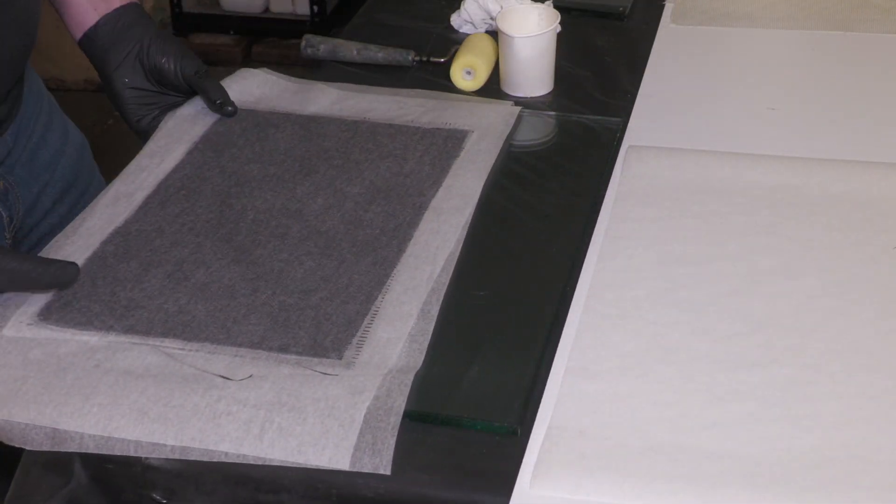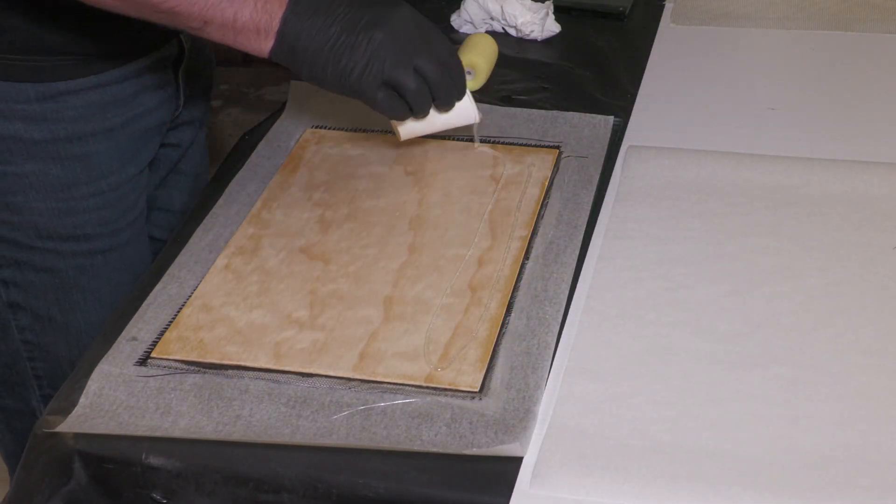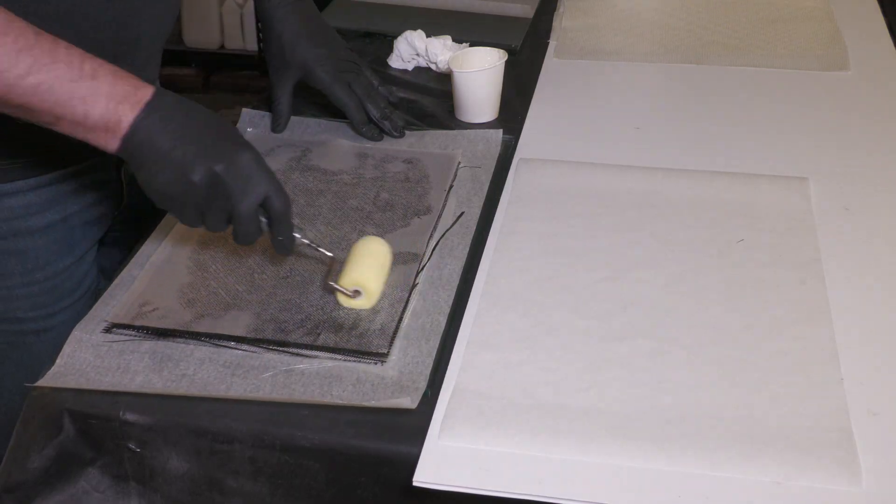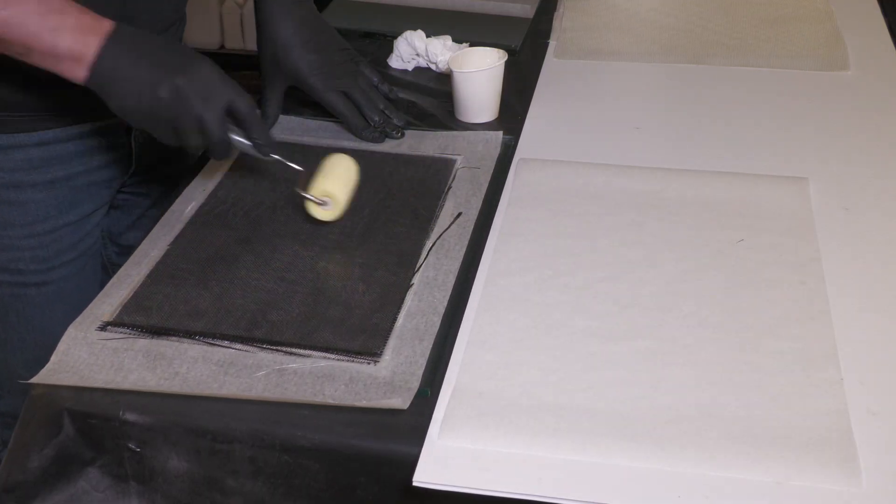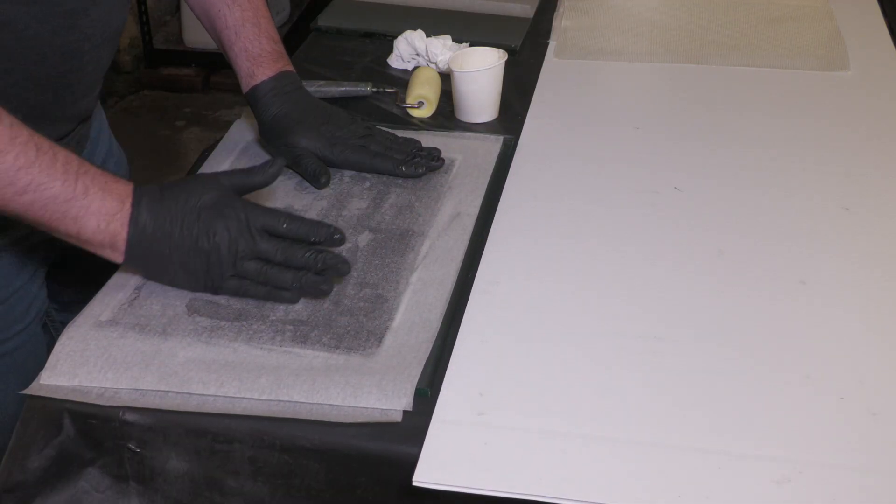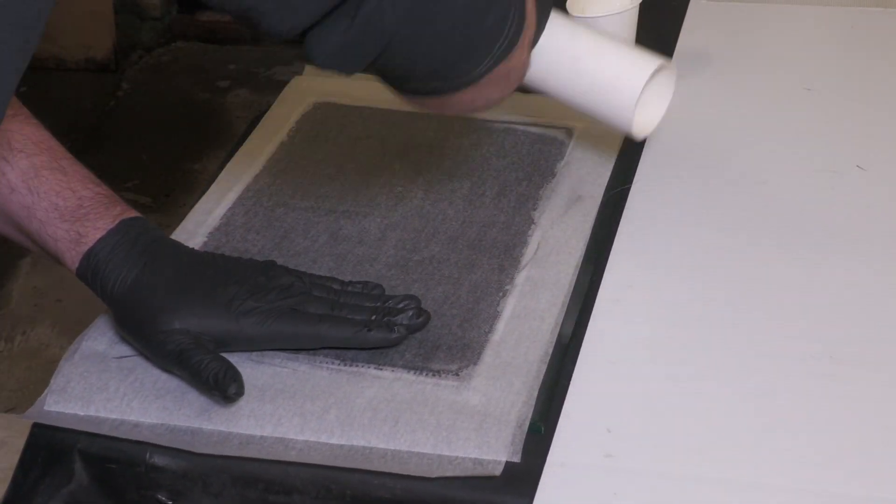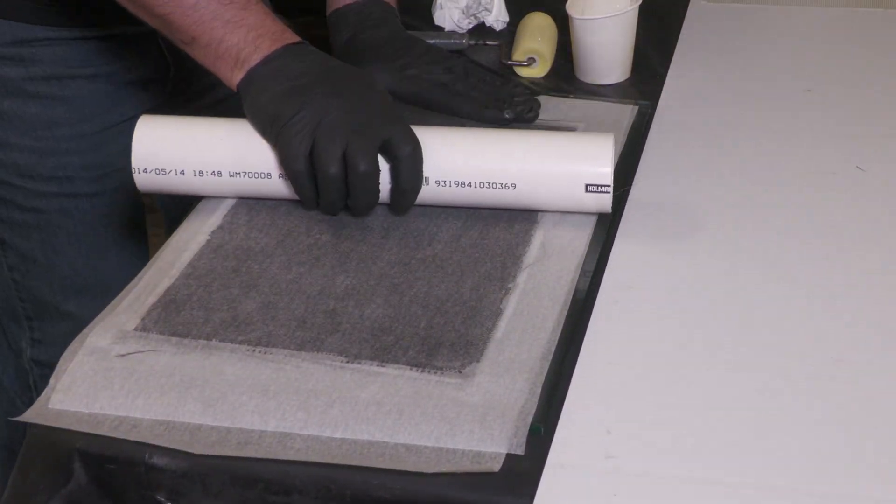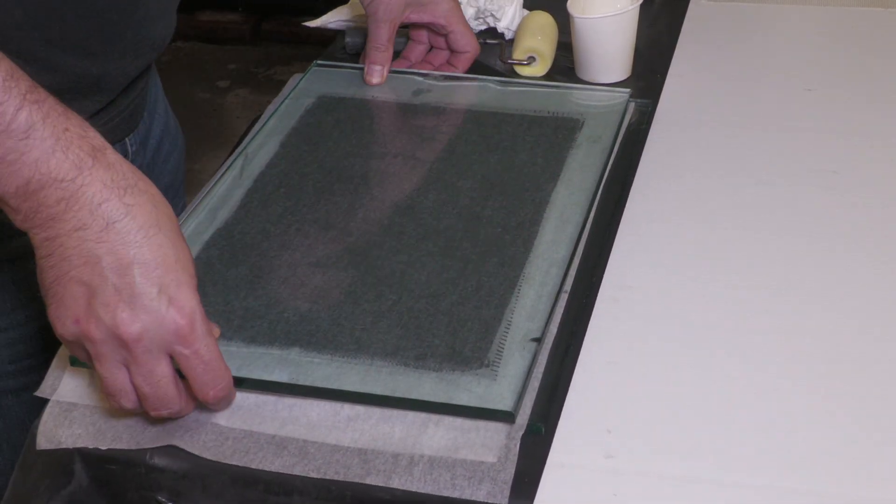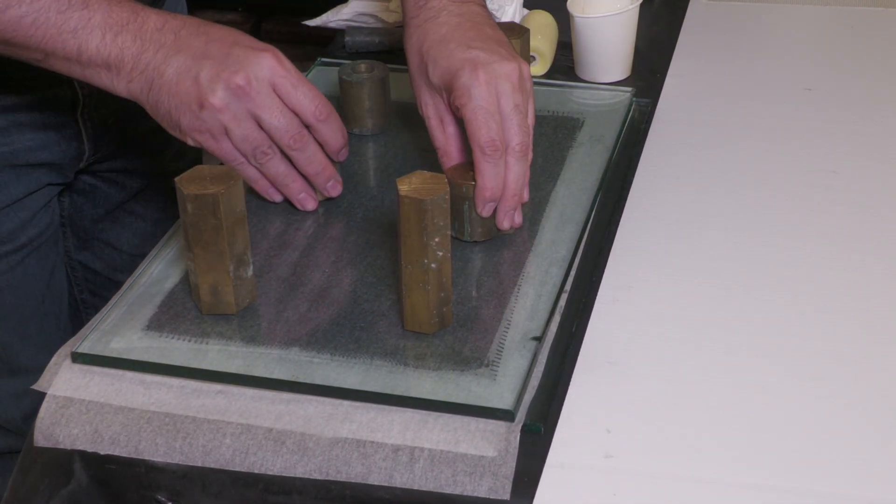Then we flip it over and repeat the process. When both sides are done, we sandwich the fin between a couple of thick sheets of glass and put some weights on it to compress everything. We leave this overnight to cure.